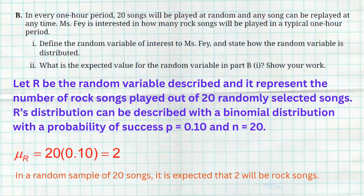The next question says, what is the expected value of that random variable? We know that if 20 songs are being played in any one hour and 10% of them are supposed to be rock songs, 10% of 20 is 2. So in a random sample of 20 songs, it is expected that two of them will be rock songs.